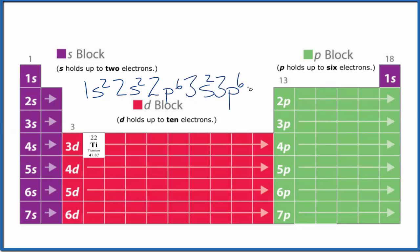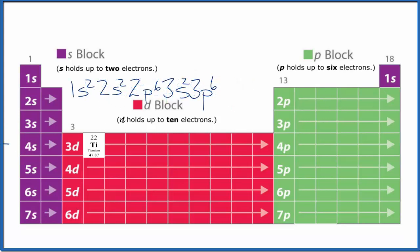3s², 3p⁶. Let's give ourselves some room here. In the fourth energy level, 4s². And then we get to 3d1, 2 — so 3d².